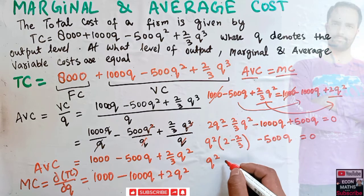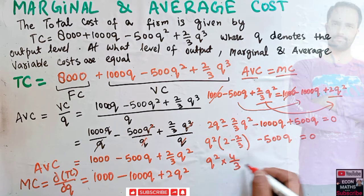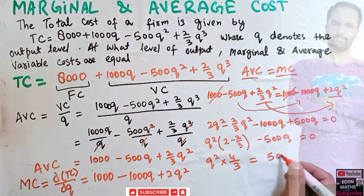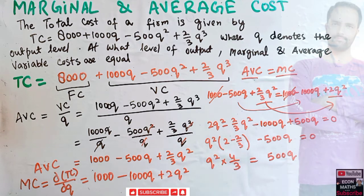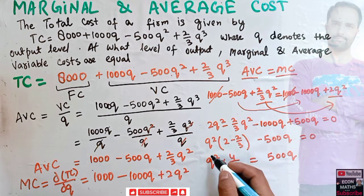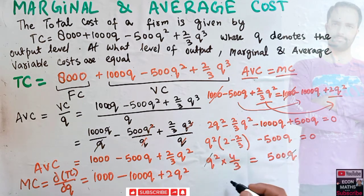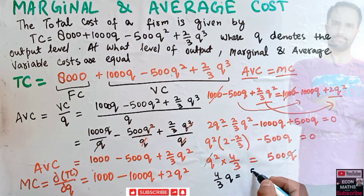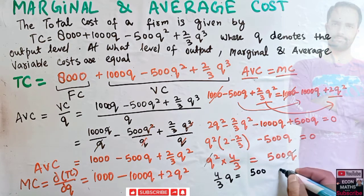Cancelling one Q, we are left with (4/3)Q = 500. Transposing (4/3) gives Q = 500 × (3/4) = 375.